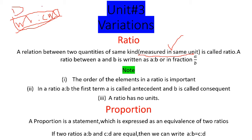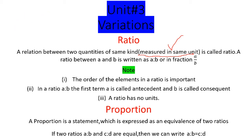یہ نہیں ہونا چاہیے کہ ایک طرف distance five kilometer ہو اور ساتھ میں weight five kg دے دے۔ ایک طرف distance اور دوسری طرف weight نہیں ہونی چاہیے۔ Ratio کی definition کے مطابق چیزیں same quantities ہونی چاہیے، یعنی same unit میں measure ہوں۔ Ratio between a and b کو a:b لکھا جاتا ہے اور fraction میں a/b کی صورت میں، جہاں a numerator اور b denominator میں آتا ہے۔